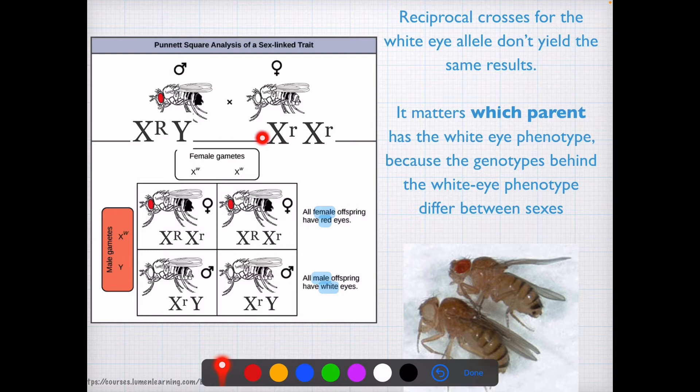Now, if we start out with the male parent, and they have red eyes, which is the capital R here, and they do not have a gene for eye color, therefore they have no alleles for eye color on the Y chromosome.